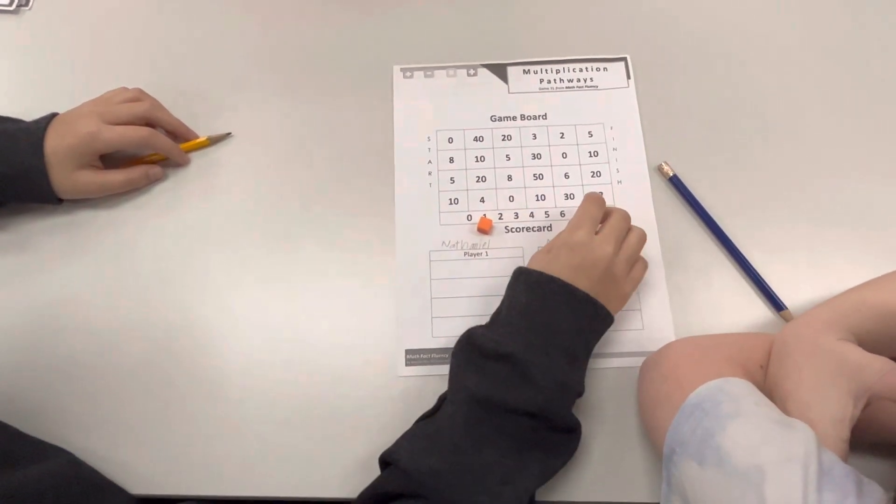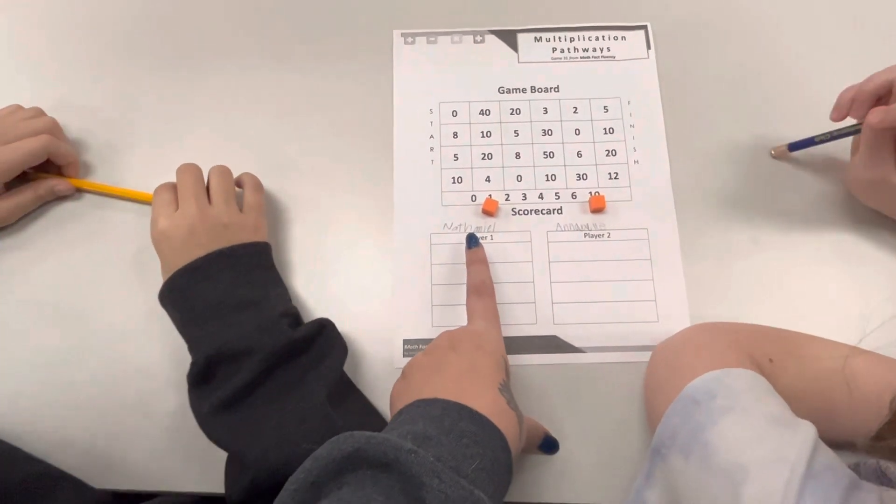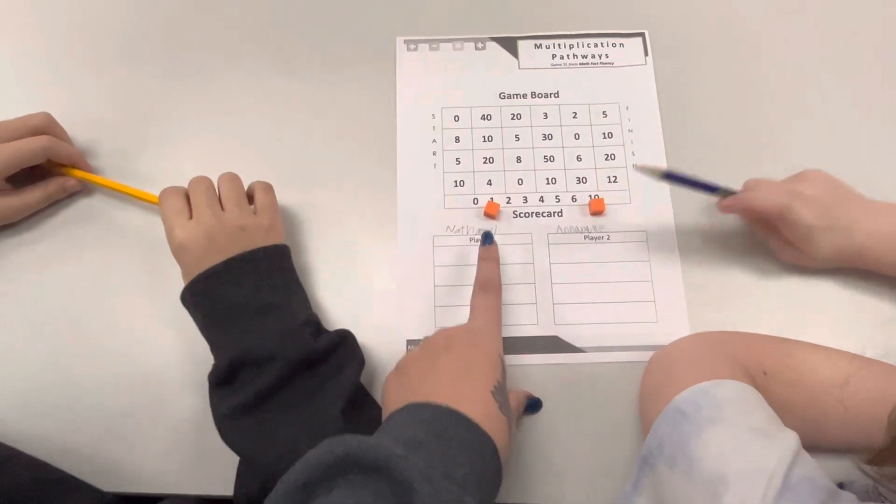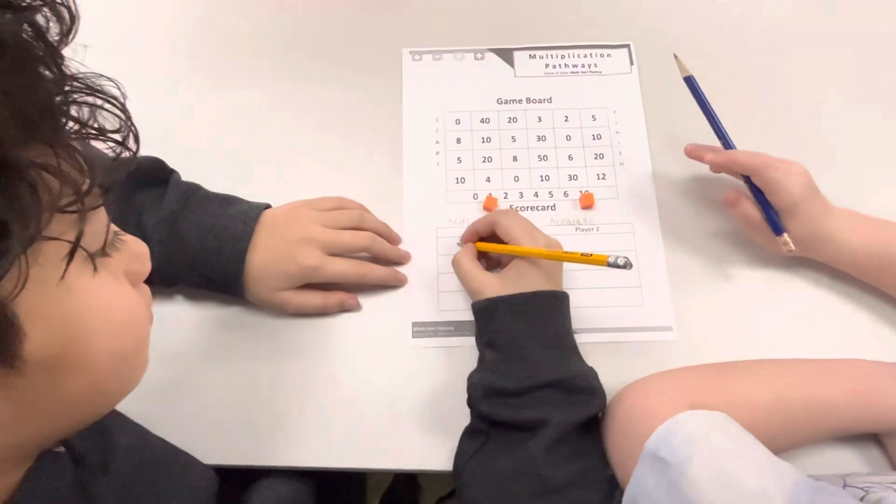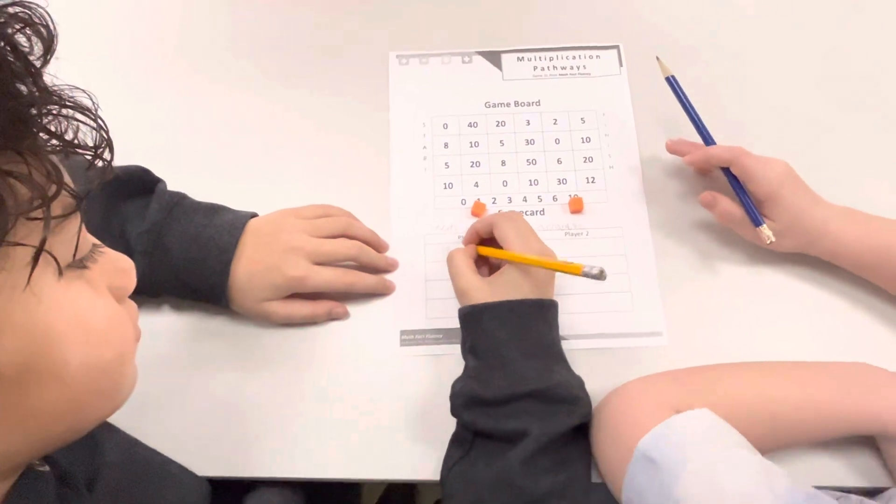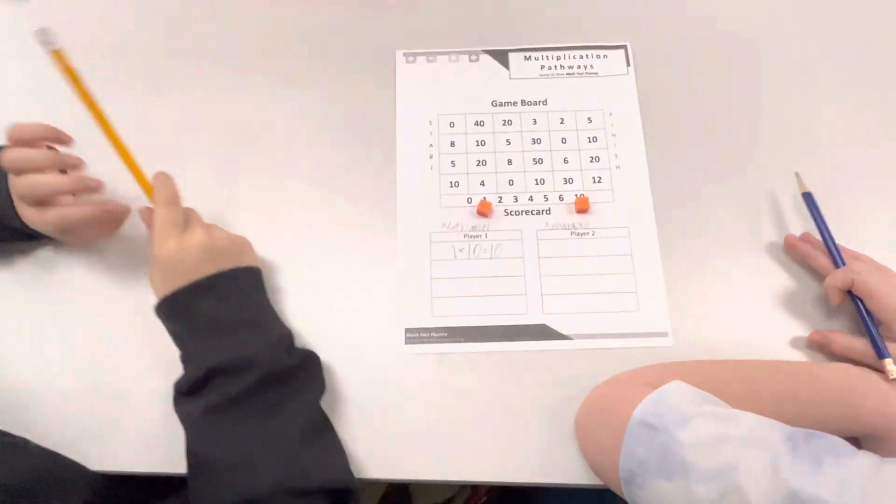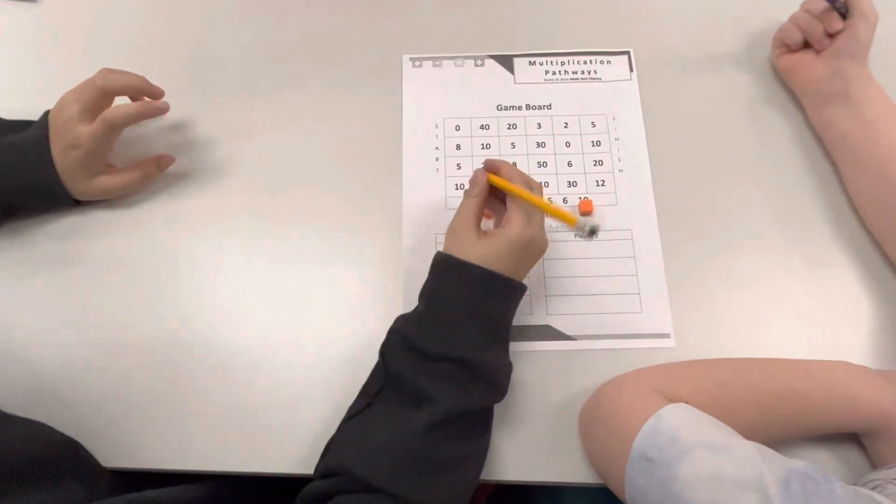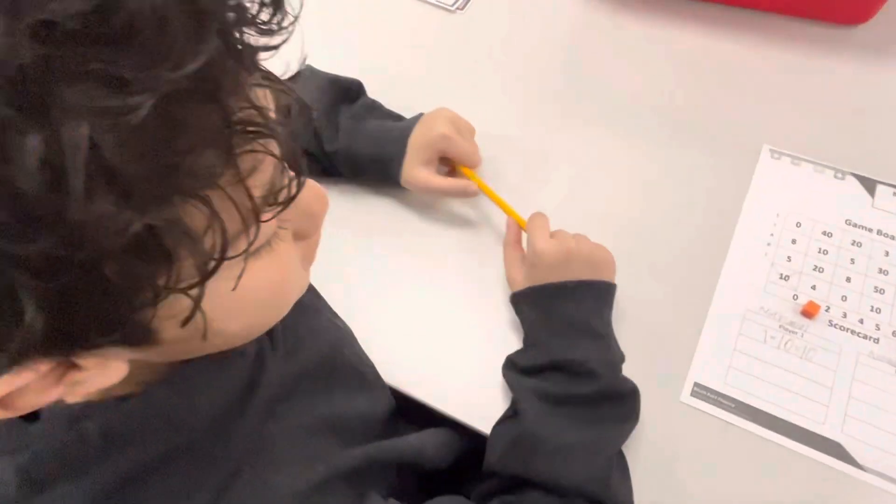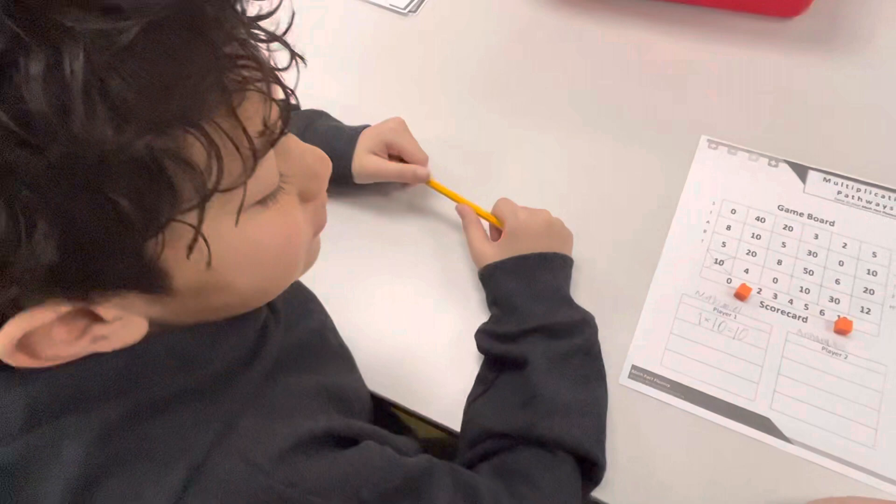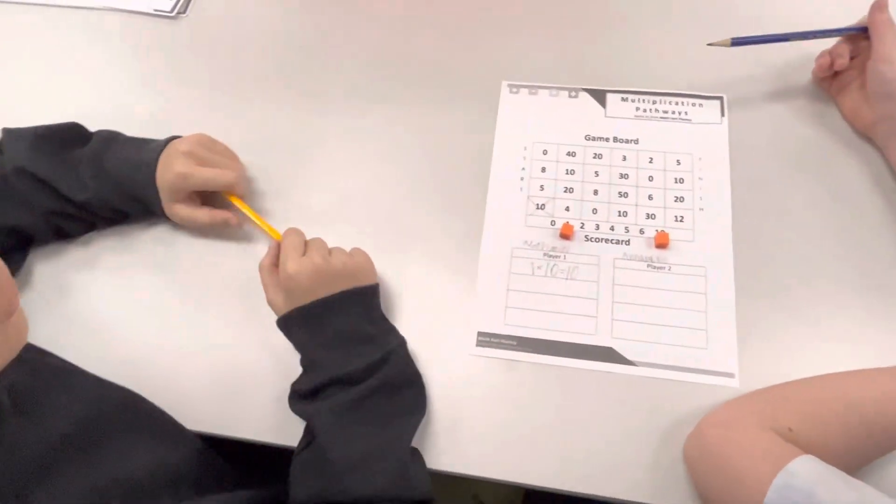So Nathaniel, go ahead. All righty. So Nathaniel placed his on ten. He's going to write a multiplication sentence right here. So what multiplication sentence would you write, Nathaniel? And then what are you going to do next? Excellent. Why did you cross that out? Because one times ten is ten, and I see a ten on the start, so I crossed it out.